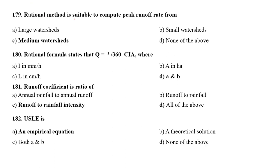Rational method is used to compute the peak runoff rate from medium watersheds. Rational formula states that Q is equal to 1/360 × C × I × A where I is in mm per hour.